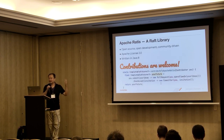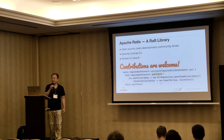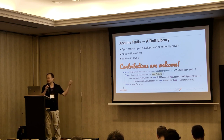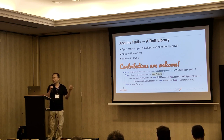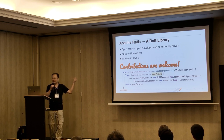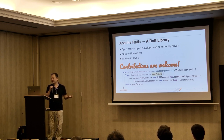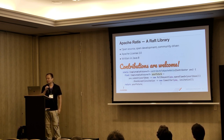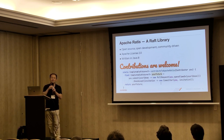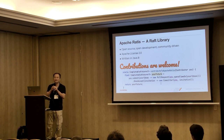Apache Ratis is open source, open development, and community driven. It is Apache License 2.0 and written in Java 8. Contributions are welcome if you are interested.